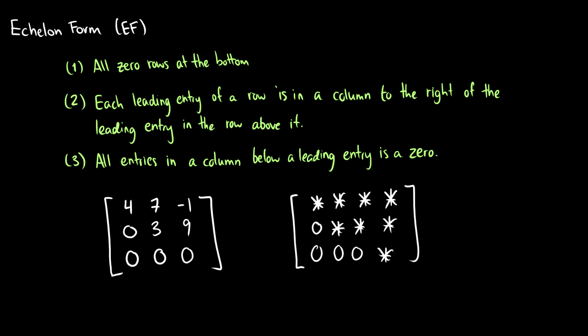What are the conditions for echelon form? First, we need a matrix and there's three conditions. The first one is all the zero rows will be at the bottom. So if we have a row full of zeros, we shift it to the very bottom.